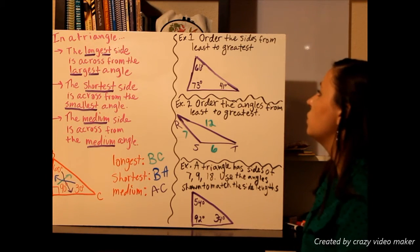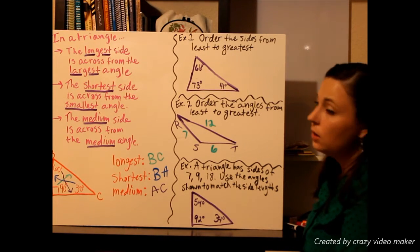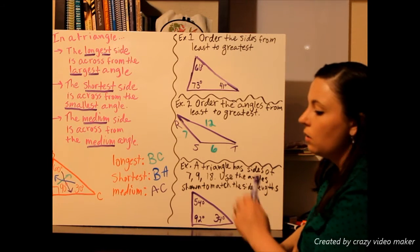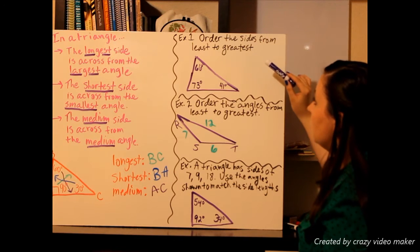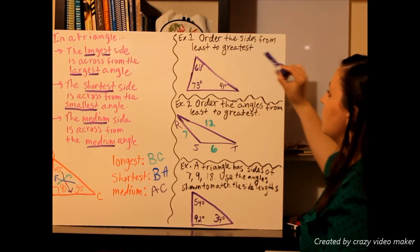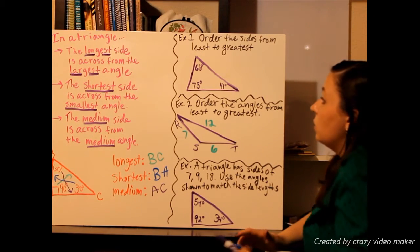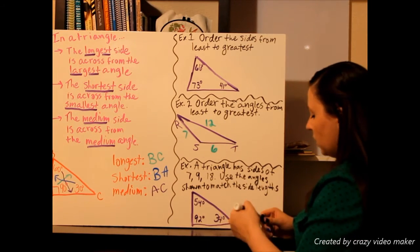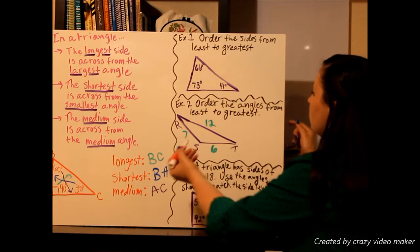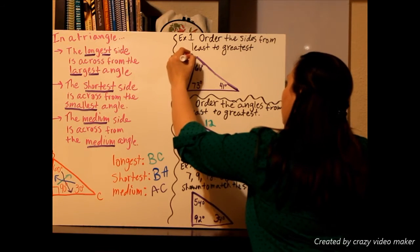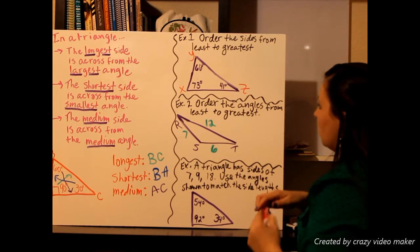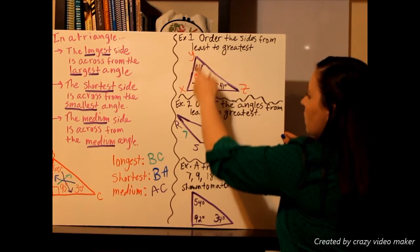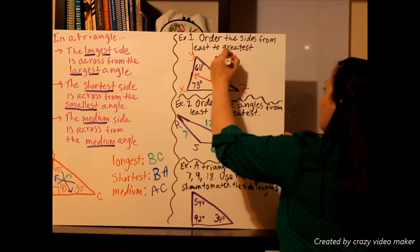Example one: order the sides from least to greatest. Make sure you're writing all of the previous information and examples down in your notes. So we want to go from the smallest side up to the biggest side. I'll look for the smallest angle first. My smallest angle is 41 degrees. We're going to call this triangle XYZ. We draw a line straight across from the 41-degree angle, and it points at side XY. So XY is our smallest side.